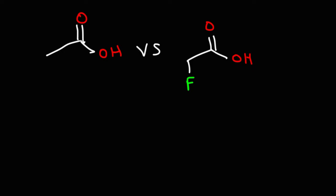The pKa for acetic acid is around 4.75. When you add the fluorine to it, this hydroxyl group becomes more acidic. The pKa of that hydrogen is 2.7, and this is due to the inductive effect.